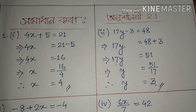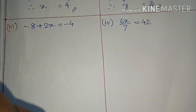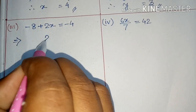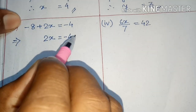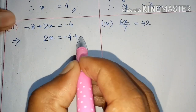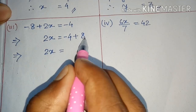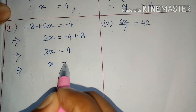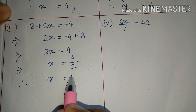Next, we will do number 3. How I study this: 2x minus 4 equals minus 8. Taking the minus 4 over, it becomes plus 8. So 2x equals minus 4 plus 8, which gives us 2x equals 4. X equals 4 by 2, so x equals 2.